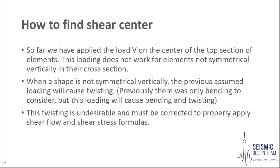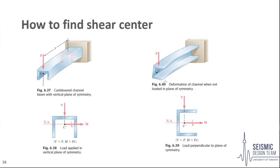Next we look at how to find shear centre. So far we have considered loads applied on the centre of the top section of elements. This loading does not work for elements that are not vertically symmetrical in their cross section. When a non-symmetrical element is loaded with the previously assumed loading, there will be twisting in the element in addition to bending, whereas previously only bending was developed. This twisting is undesirable and must be corrected to properly apply shear flow and shear stress formulas.